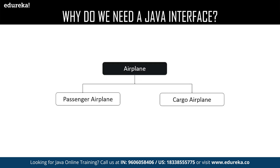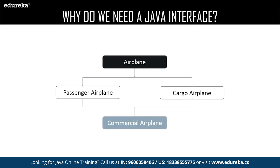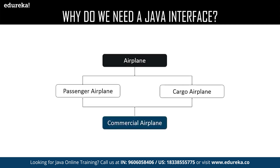Let us consider an airplane which requires both the properties of carrying huge cargo and passengers. Let us assume we have two planes — one is capable only of carrying passengers and the other only of carrying cargo. Now we need to carry both passengers and cargo in one single plane, which seems impossible based on how Java works, as it cannot access the properties of two different parent classes at the same time.